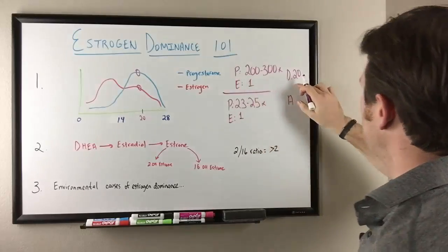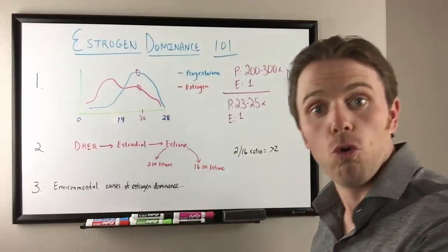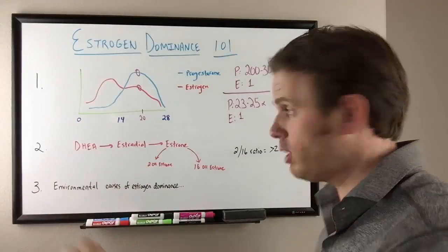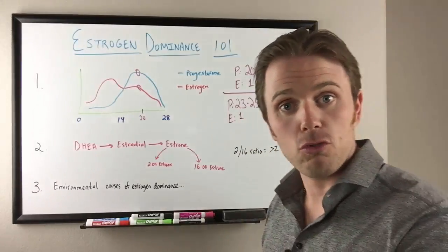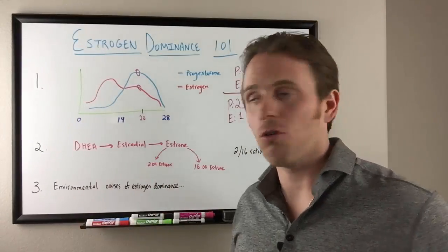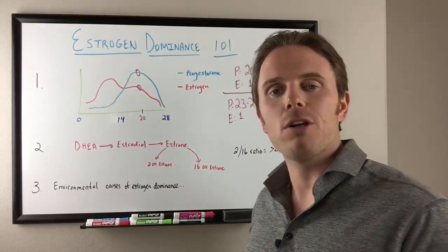But if we're looking at on average, typically you're looking at about a 23 to 25 times ratio for progesterone in relationship to one estrogen. This is from the research of Dr. John Lee. He's written a couple of books on this topic.